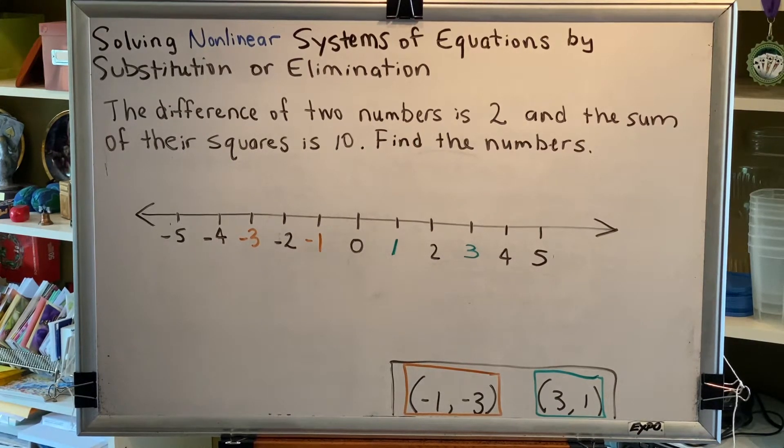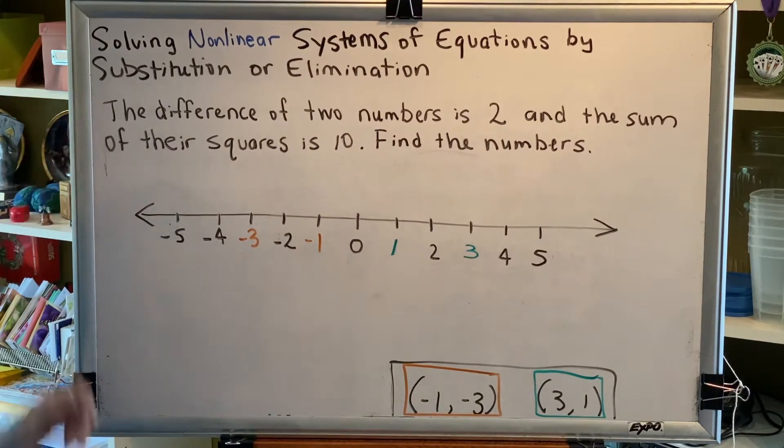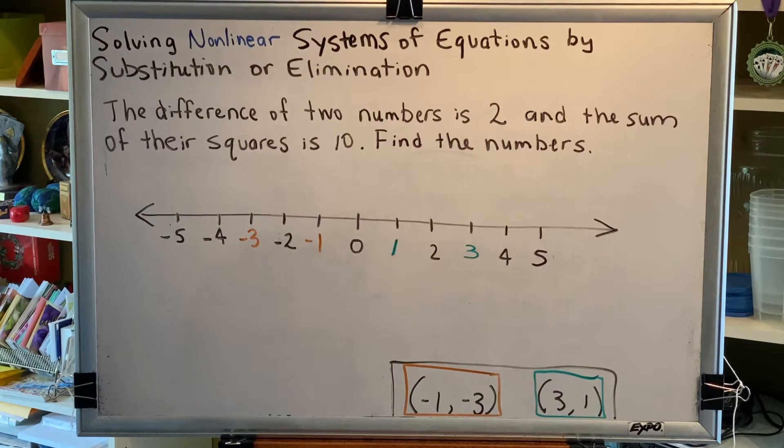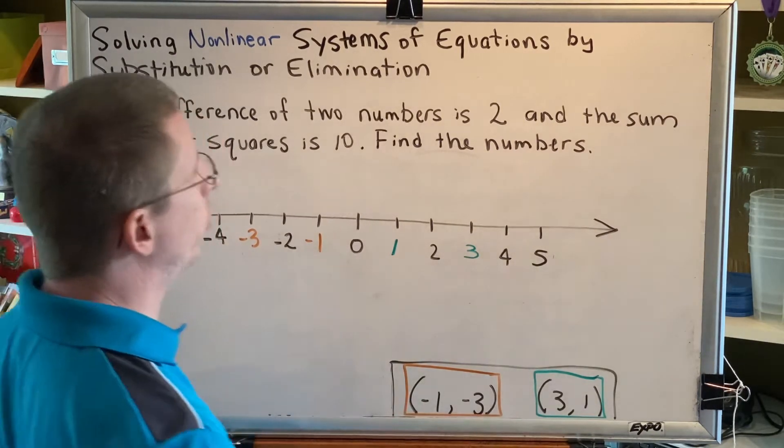The topic of this video is solving nonlinear systems of equations by substitution or elimination. This is a continuation of the previous video. In our previous video we were presented with this problem: The difference of two numbers is 2 and the sum of their squares is 10, find the numbers. We came up with two ordered pair solutions.